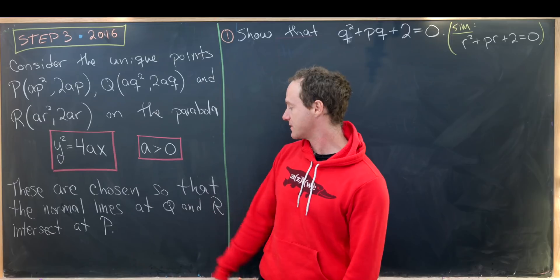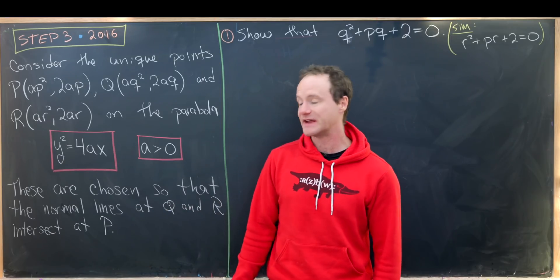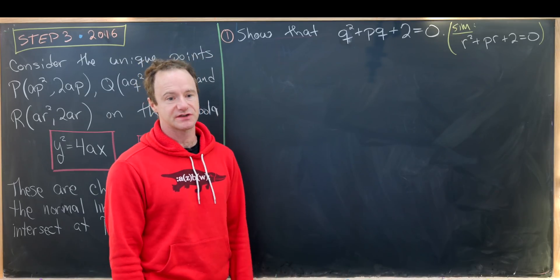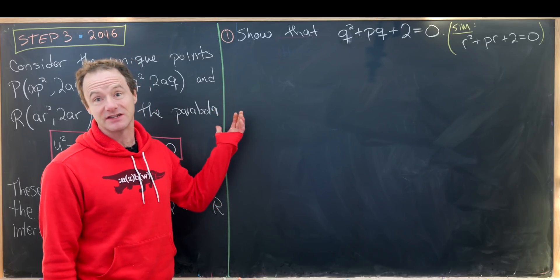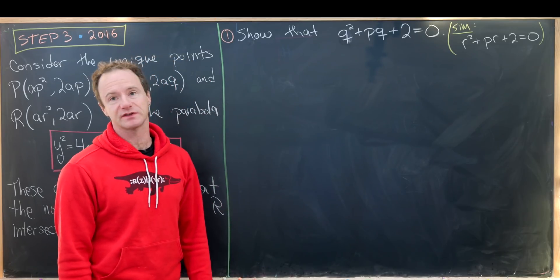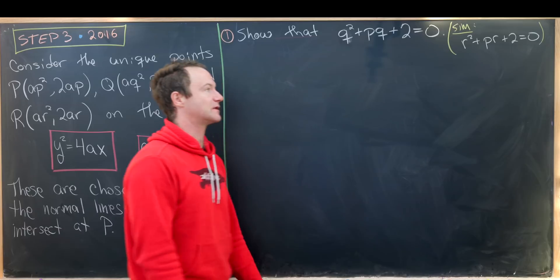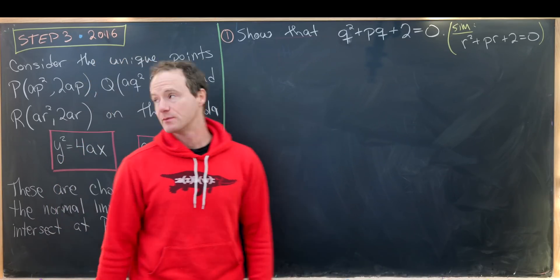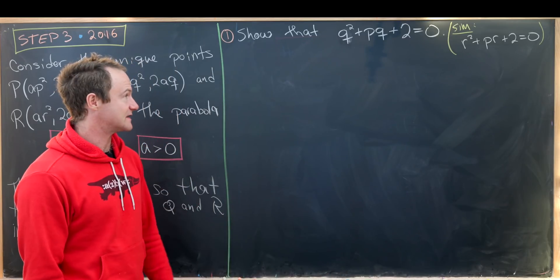Furthermore these three points are chosen so that the normal lines at Q and R intersect at P. We're going to solve three questions associated to this setup. Our first question is to show that Q² + PQ + 2 = 0. And likewise we will immediately get that R² + PR + 2 = 0 just because there's some symmetry between the point Q and the point R.